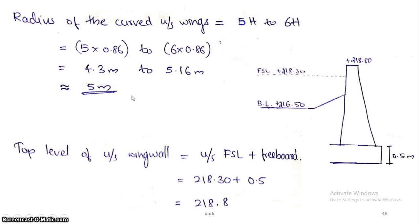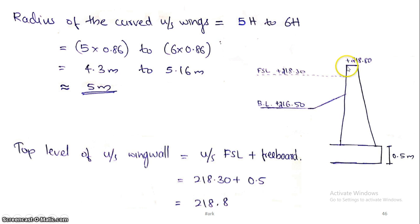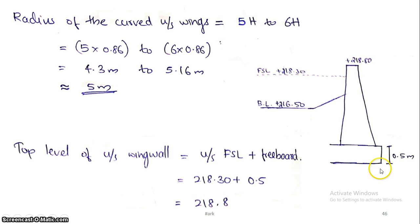Next, the upstream wing wall sectional view. The upstream bed level is 216.5 and FSL (full supply level) is 218.3. The FSL height is 3.5m provided. The top level is 218.8m. The top level of upstream wing wall equals upstream FSL plus 0.5 meter freeboard, giving 218.8 meters. For foundation design, we provide 0.5 meter thickness based on soil conditions.